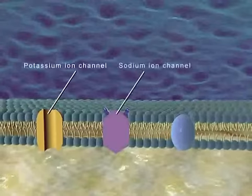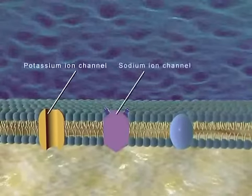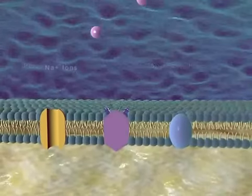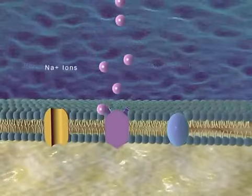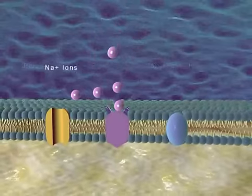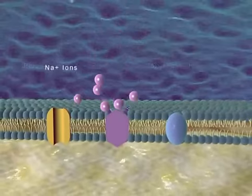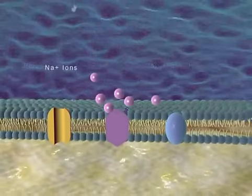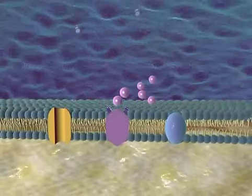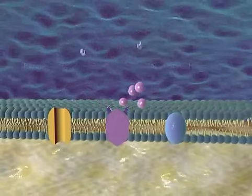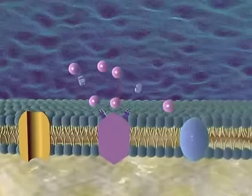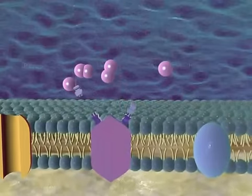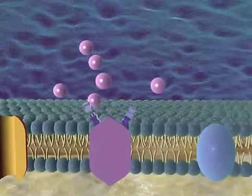Another type of reaction involves changes in the permeability of cell membranes. A drug molecule binds to an ion channel receptor, a receptor protein that is a structural component of the cell membrane. The drug's binding may open or close the ion channels to allow or prohibit the movement of ions into the cell.